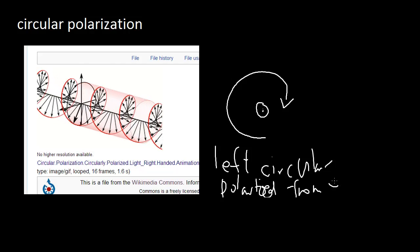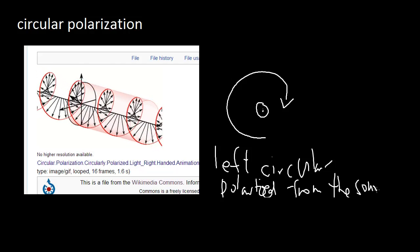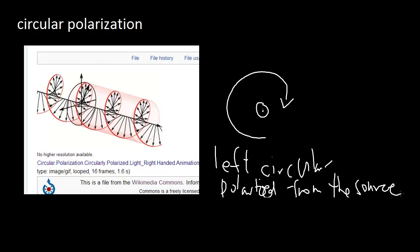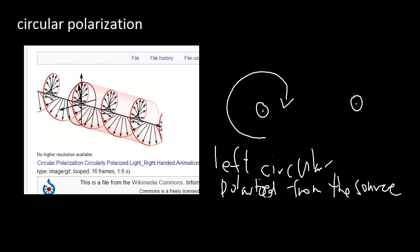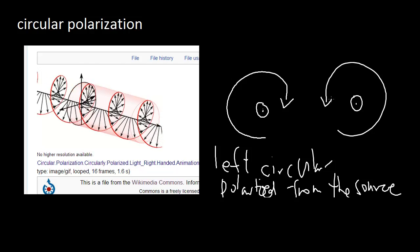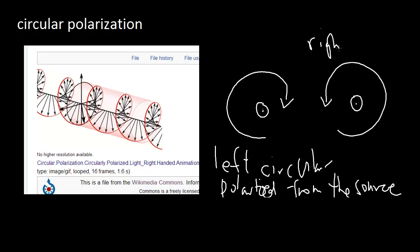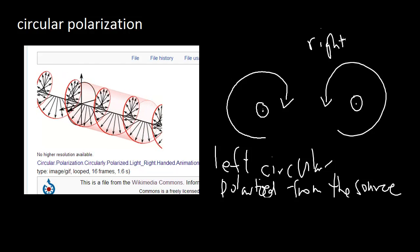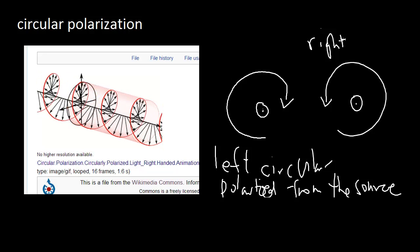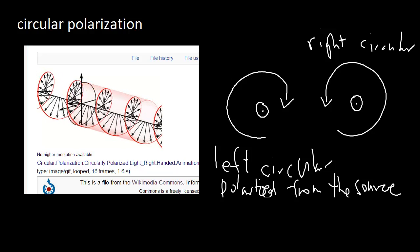Technically, we should say from the source, because some people do it the other way, but most people go this way. Same case, we can have right circular polarized by it going the other way. So always point your thumb towards the propagation direction, and then see which way your finger curls.